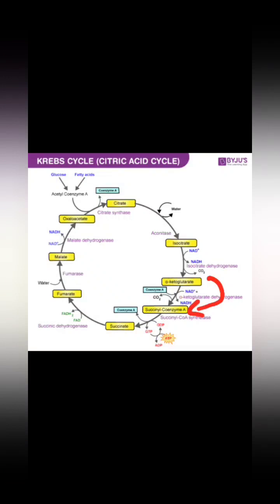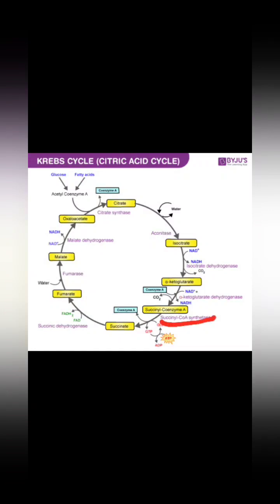Succinyl-CoA is then converted into succinate in the presence of the enzyme succinyl-CoA synthetase, also known as succinyl-CoA thiokinase. In this step, GTP is produced. GTP and ATP are inter-convertible, so the GTP produced is effectively converted into ATP.